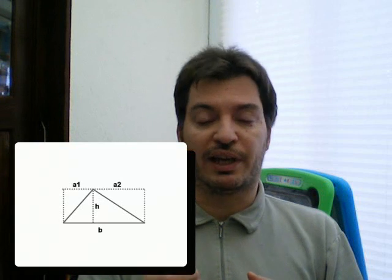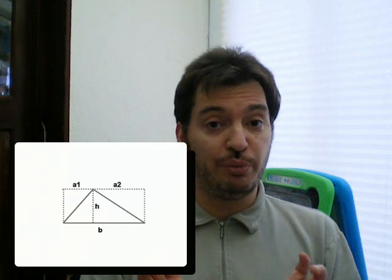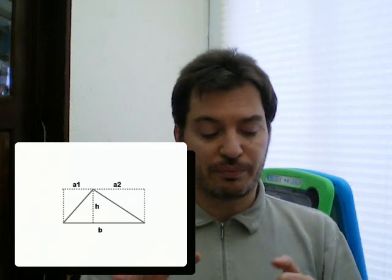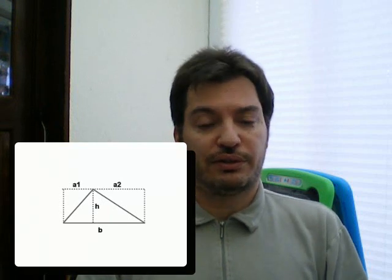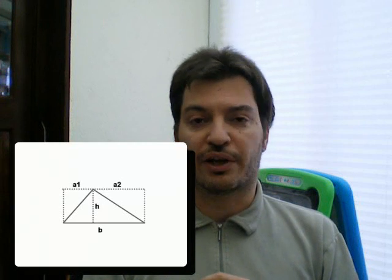But you also know that those two widths add up to b, because you can see that in the picture. So, the total surface of those two rectangles is still b times h.